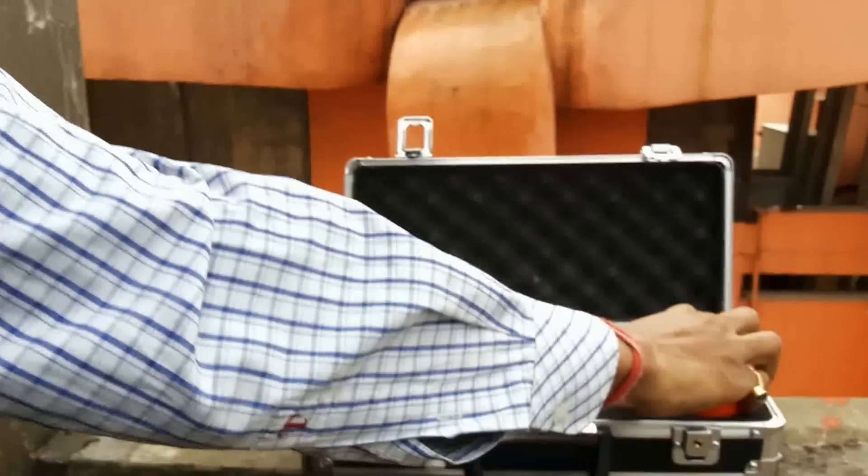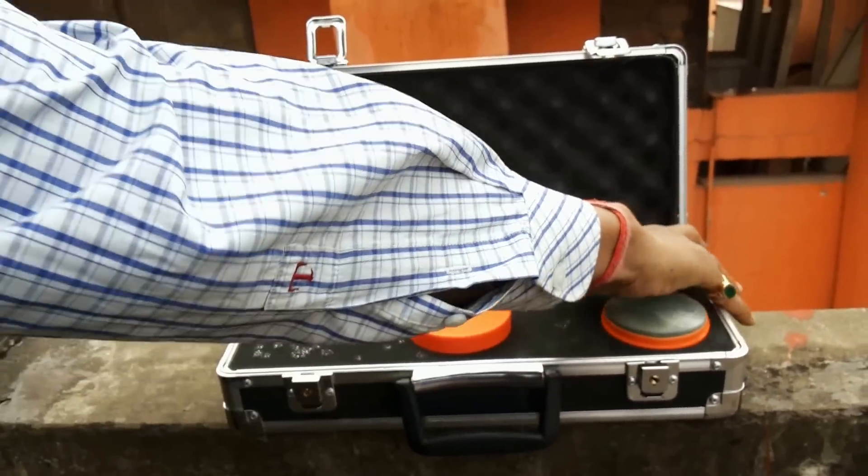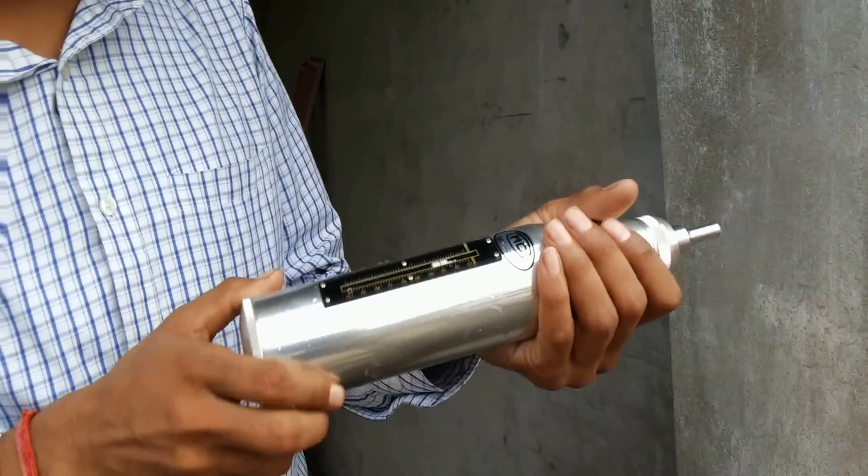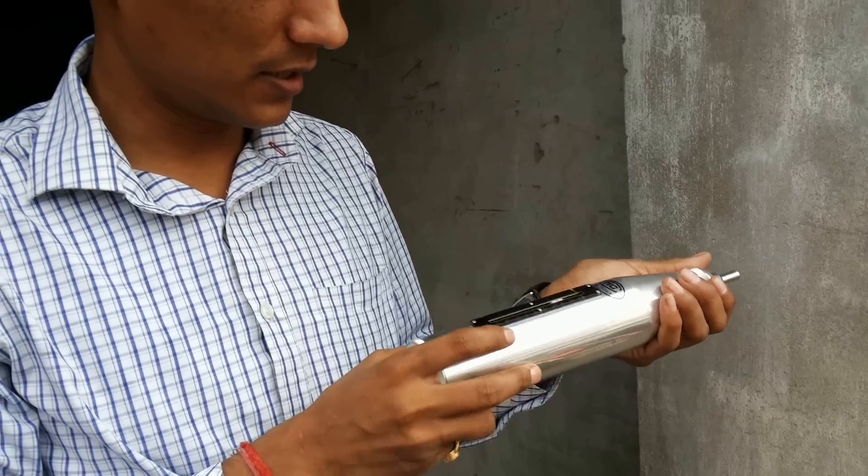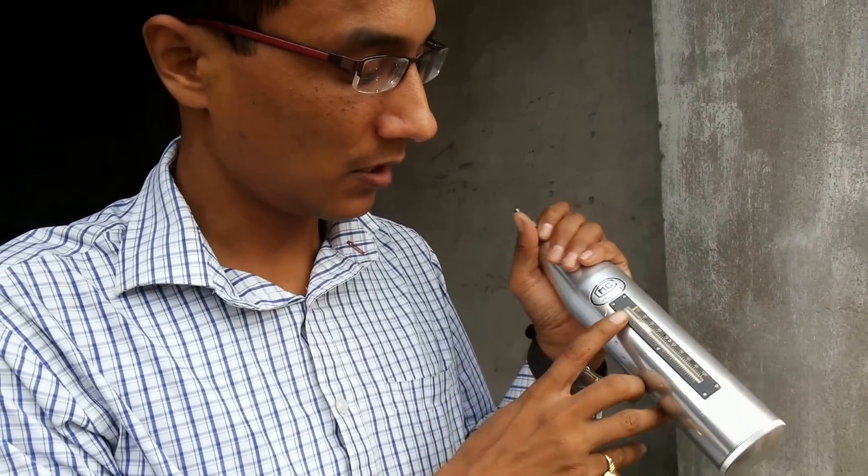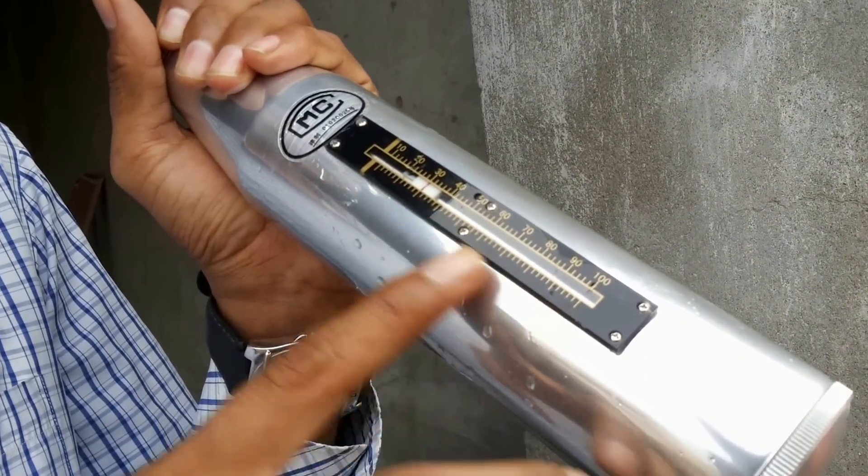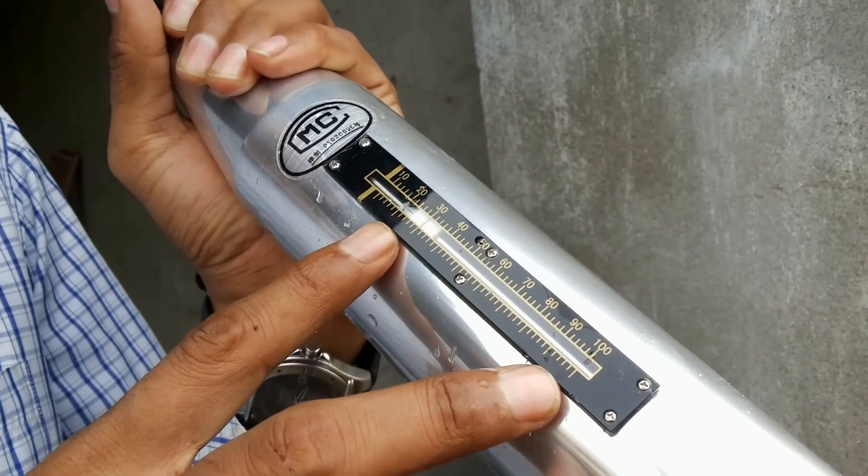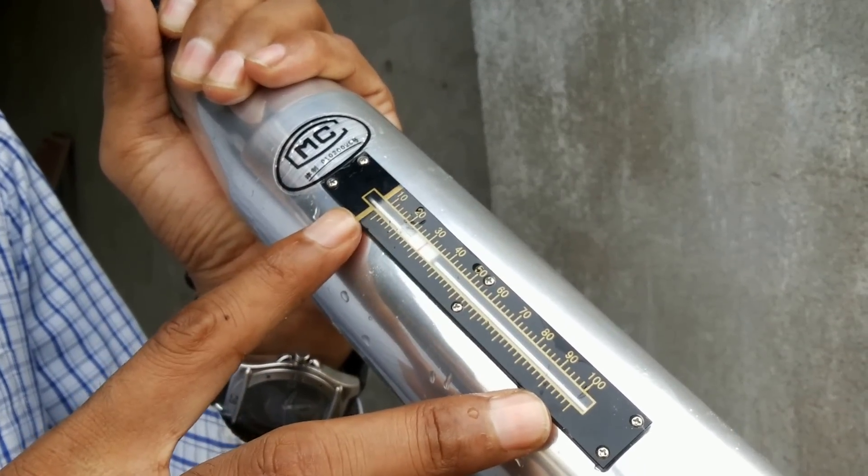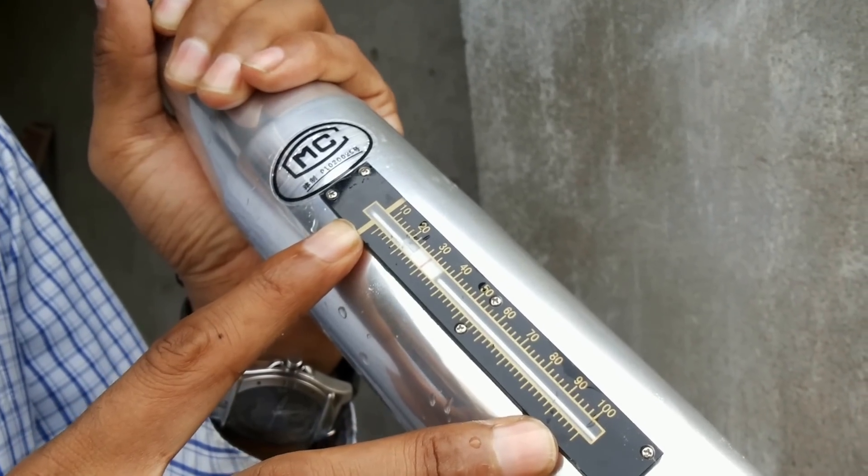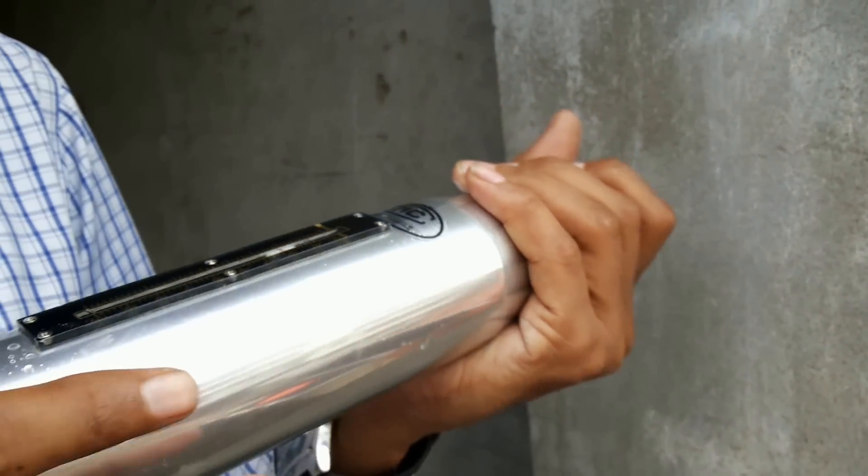After that, at the test point, this is the range of the hammer from 10 to 100. These are the rebound numbers, basically compressive strength in terms of spring strength.